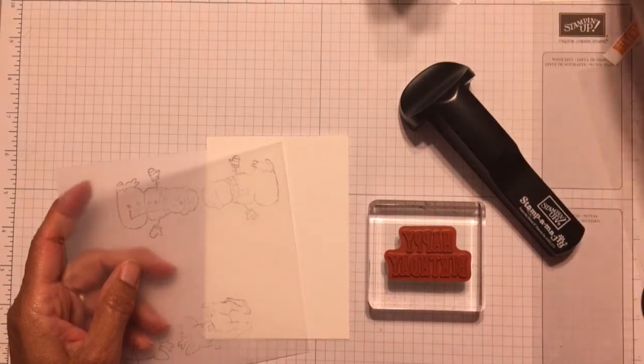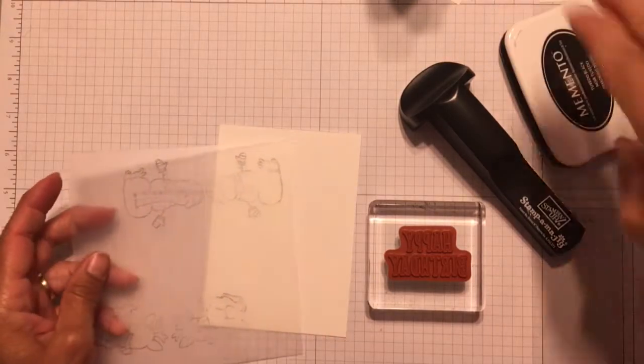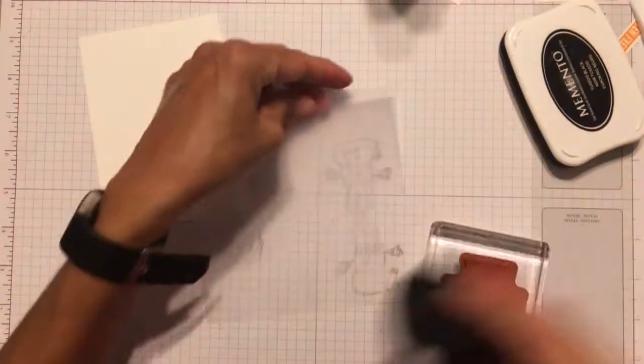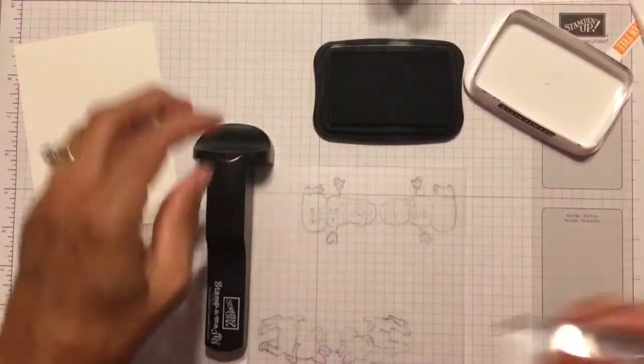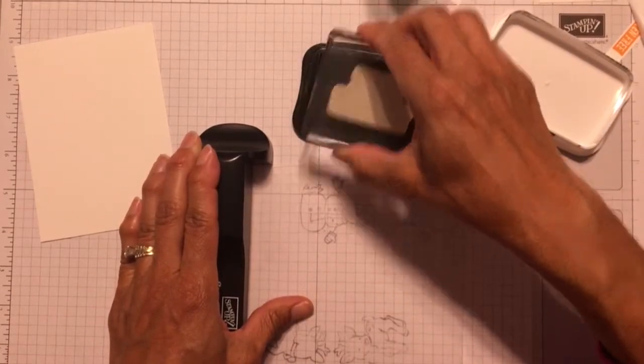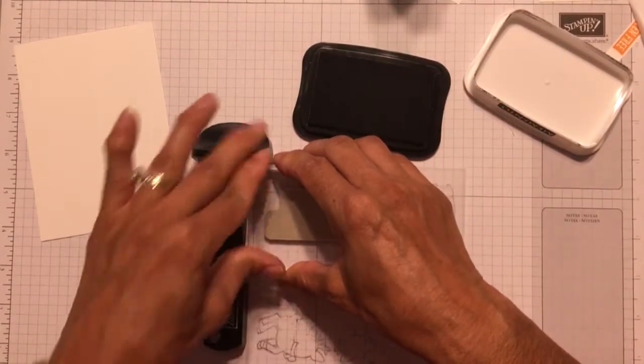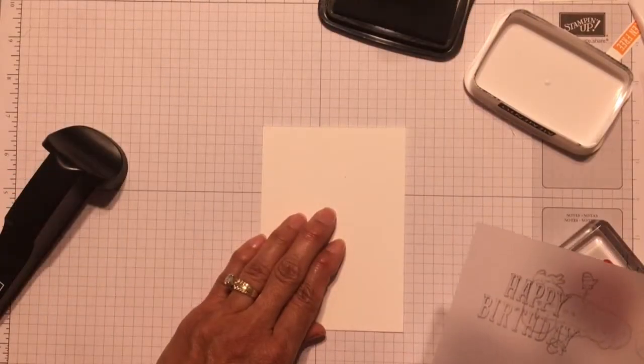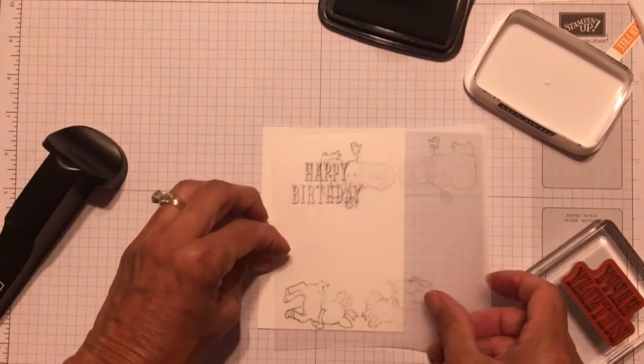To finish off the card, I've cut a panel of Whisper White cardstock to three and three-quarters by five and a quarter inches. And I'm going to stamp the Happy Birthday sentiment on it in Memento Tuxedo Black Ink. So I'm using my Stamp-O-Majig to make sure that I get perfect placement. If it were a photopolymer stamp, I would probably just go for it.